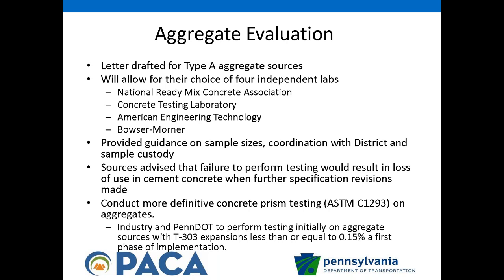When the letter went out to Type A aggregate sources, some opted not to participate — their T303 testing will be removed and a note placed in the bulletin stating their material cannot be used for concrete. Because of the number of sources, we did two rounds of testing, splitting things at the 0.15 test limit on T303. It is a year-long test, so two rounds took over two years.